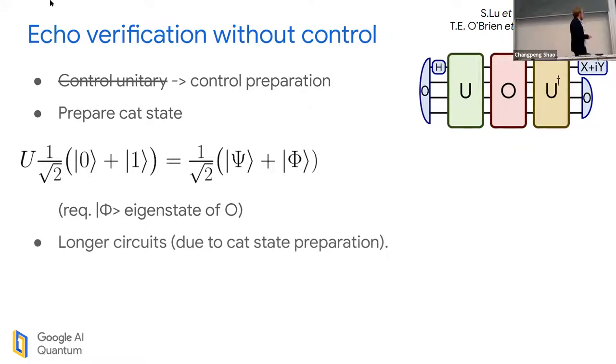This requires that my unitary, which previously prepared psi from zero, now also prepares a state phi from the state one. I require that phi is an eigenstate of the operator O in the middle and I know its eigenvalue. I also require that phi have zero overlap with psi. If all these things are satisfied, this contains exactly the expectation value of O in the same way as the control qubit on the previous slide.